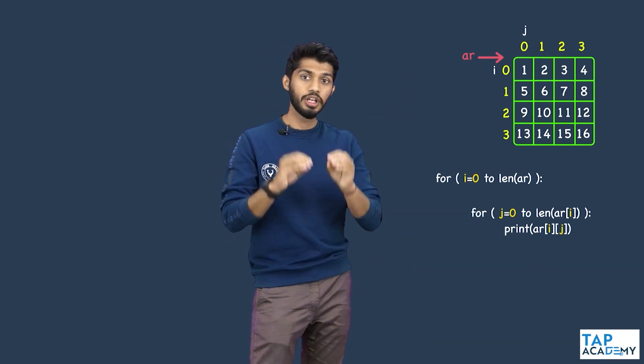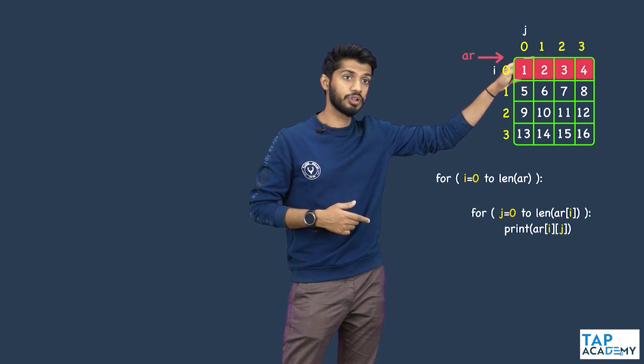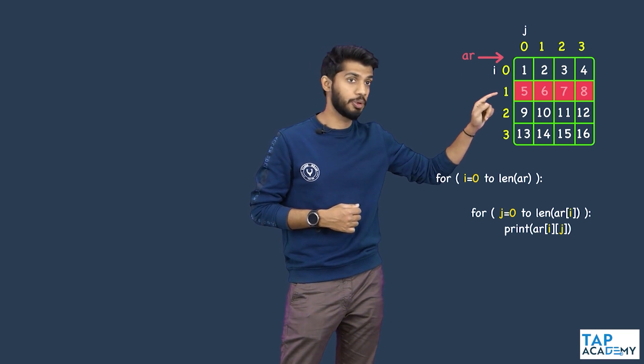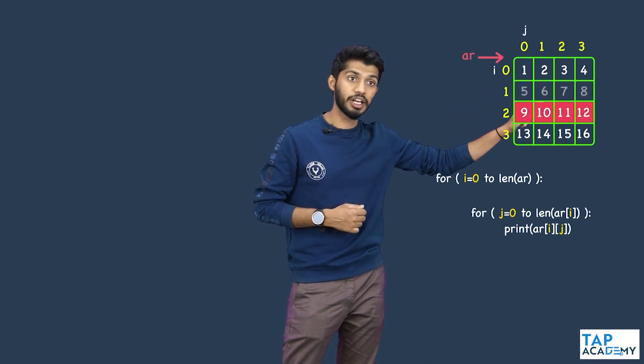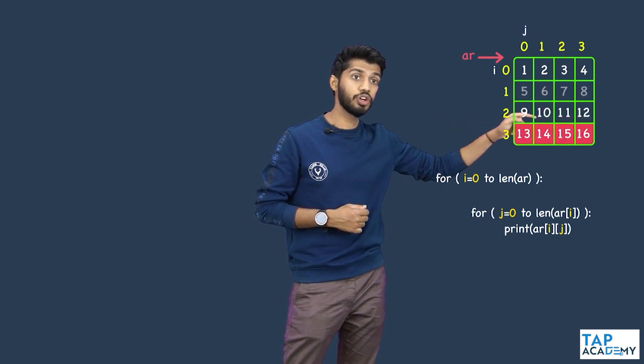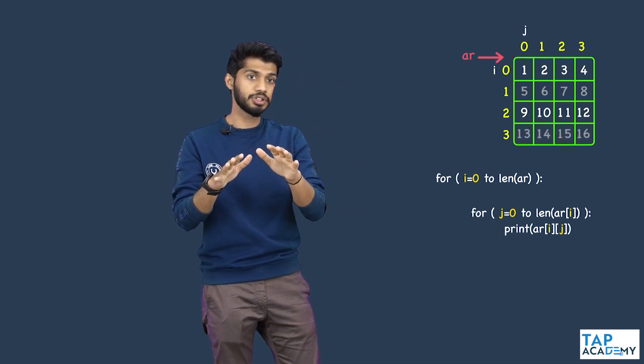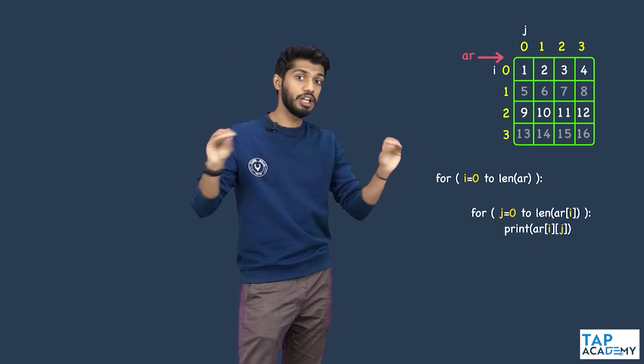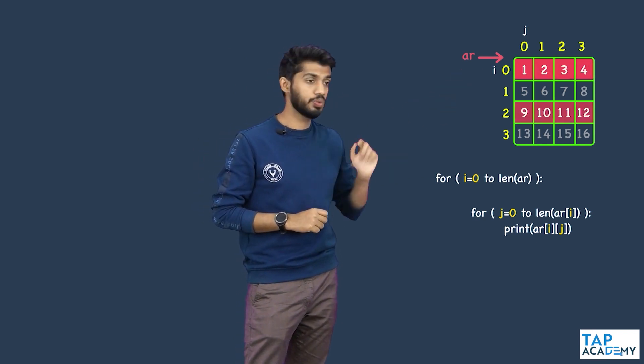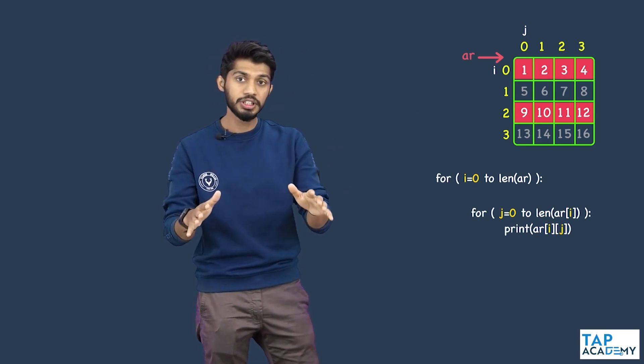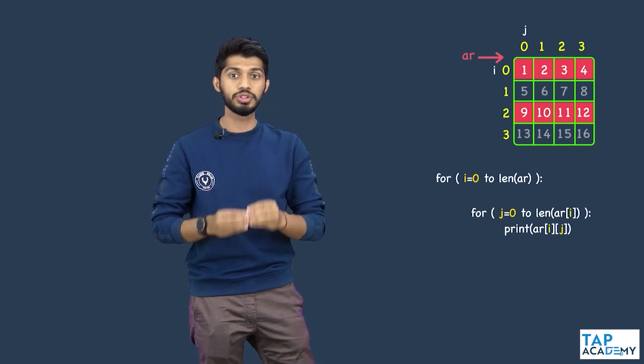Let us understand which part of the code we have written correctly. The previous output was 1, 2, 3, 4, then 5, 6, 7, 8 — so row 1 (5, 6, 7, 8) is wrong. Then 9, 10, 11, 12 is correct. Then we got 13, 14, 15, 16 but we want 16, 15, 14, 13. The code works correctly for row 0 and row 2 — in simple words, it works correctly for even rows but not for odd rows.